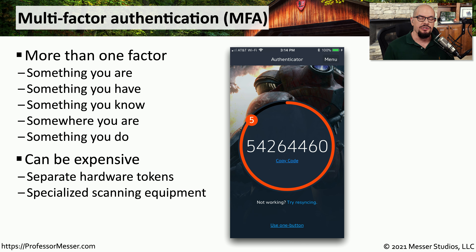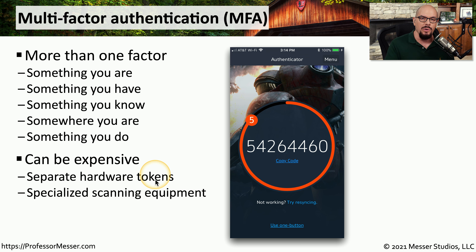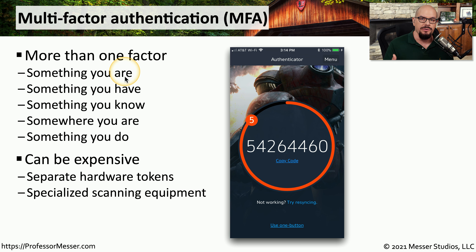Adding these additional authentication factors may have a cost associated with them. For example, the authentication factor 'something you have' might involve a hardware token that you carry with you. Or if you're using 'something you are' as the authentication factor, that may include biometrics, which requires an expensive reader for your fingerprint or handprint.